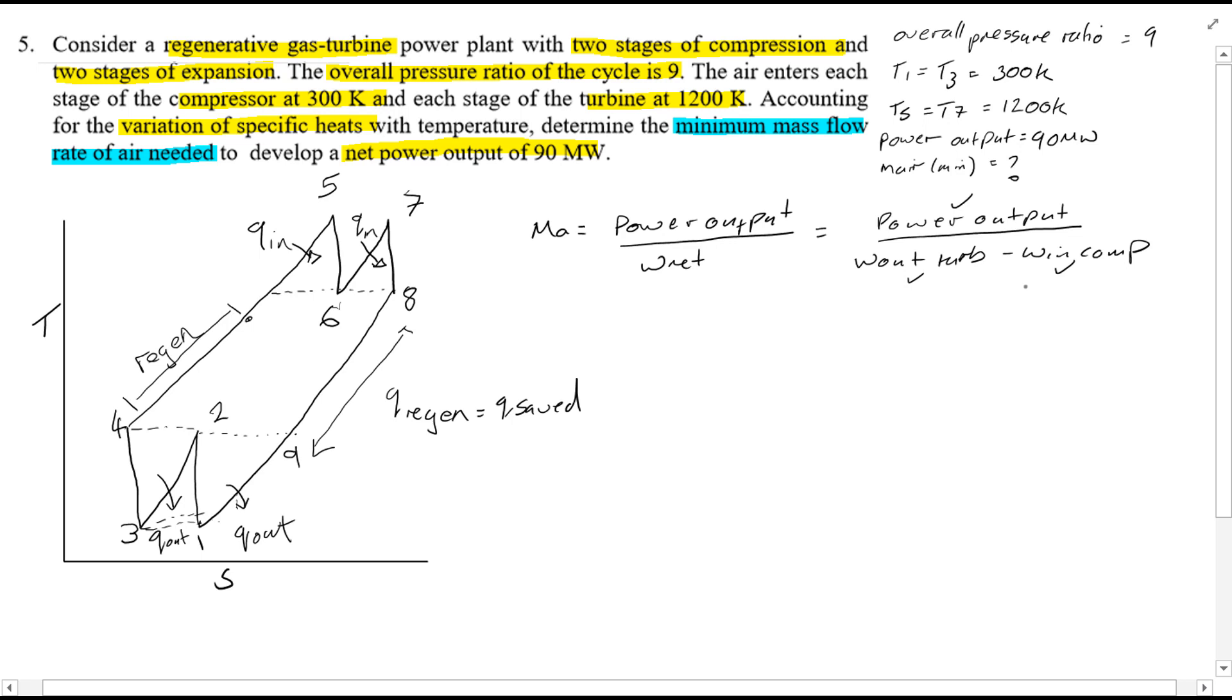The mass flow rate will be minimum when the cycle is most efficient, and an efficient cycle will assume it's ideal, therefore the compressors and turbines are isentropic and the regenerators have an effectiveness of 100%. Also we can say that the compression and expansion rate ratios across each of the compression and expansion stages are identical.